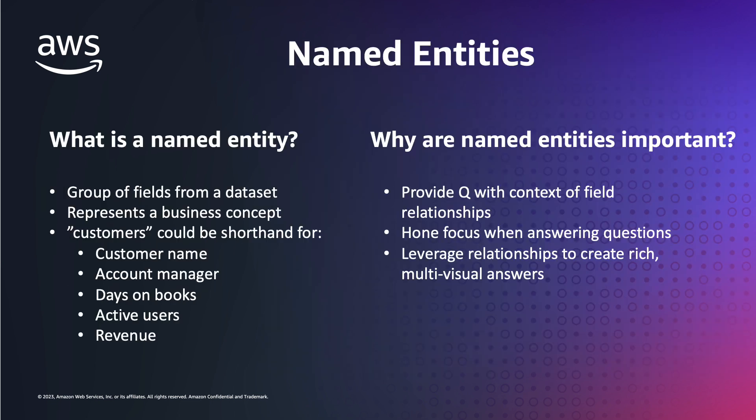So let's talk a little bit about named entities. This is going to be a little abstract and will become clearer once we actually get into the product demo, but just to tee it up — what is a named entity? It's a group of fields from a dataset and these fields represent a business concept. For example, when your business users think about customers, it's unlikely that they literally just think about customer names. They probably think about other things that go along with customers.